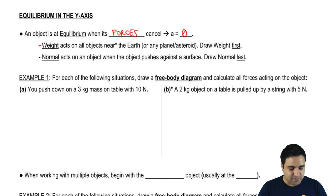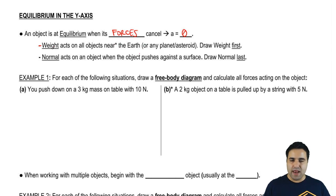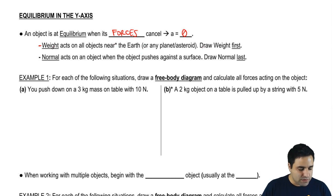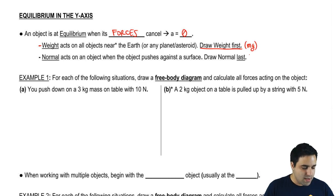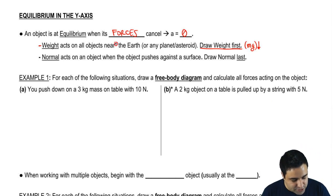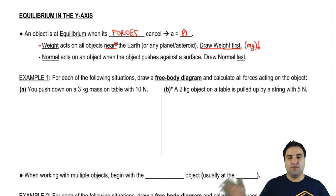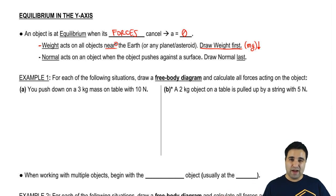Remember also that weight is a force that acts on all objects that are near the earth or any other planet, asteroid, the moon, whatever. We're always going to draw weight first. The reason for this is because weight always exists — weight is just mg — and most of the time it's going to be going down. Even if you're far from the earth you're still going to be pulled on with some gravity, but we'll talk about that a little later.